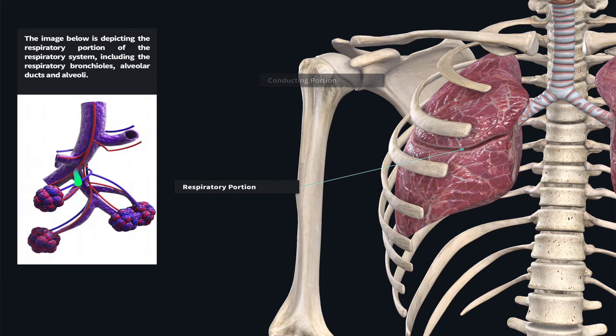The respiratory bronchioles branch into a number of alveolar ducts, and each alveolar duct terminates as a bundle of alveoli, which have the appearance of a bundle of grapes. It is at these alveoli that gas — whether oxygen coming in or CO2 going out — is exchanged between the alveoli and the circulatory system that overlies them.